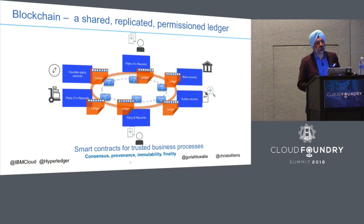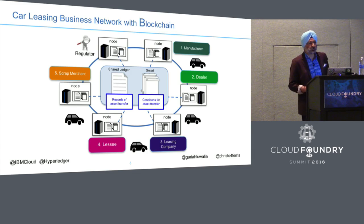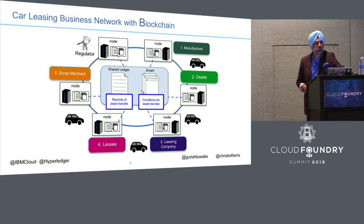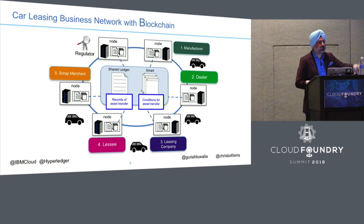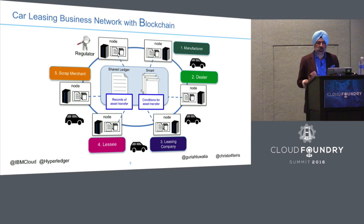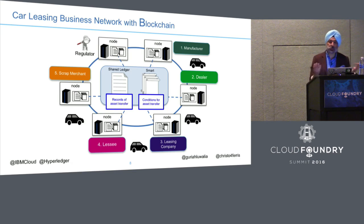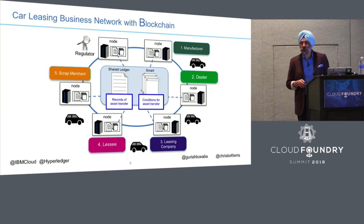Looking at a more specific picture: consider the lifecycle of a car as an example of an asset. Think about all the paperwork involved — who owns the asset, its licensing, DMV certification, insurance, who's driving it, who's borrowing it. There are also telematics aspects. This is an example of a tangible asset whose transactions can go on a blockchain, with each node representing an entity recording transactions at each stage of the vehicle's lifecycle.